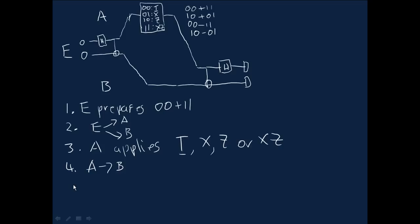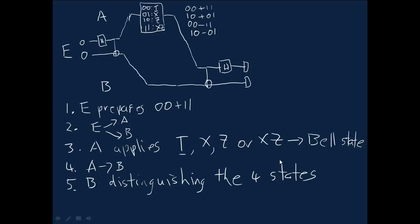Then Alice sends her qubit to Bob, and finally the protocol is concluded by Bob distinguishing the four states. Which of the four states that he has. So I should have said, when Alice applies this, it gives one of the four Bell states. And the final step is just for Bob to distinguish which of the four Bell states he has. And all of these things we know on general grounds can be done.